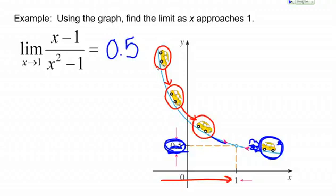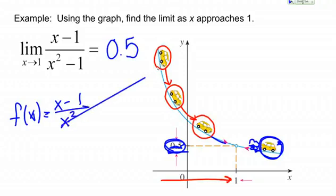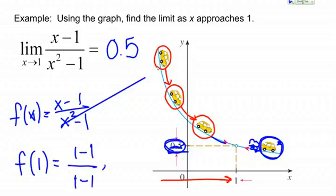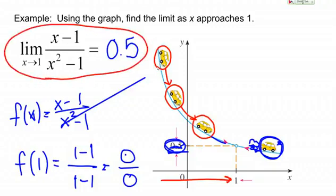That's the idea of a limit: where is the graph headed as you get close to the point? What's going on near the point? The big idea is that we don't care what's actually happening at the point. For example, if F of X equals (X minus 1) over (X squared minus 1), and we try to actually plug in 1, we get 1 minus 1 over 1 minus 1, which is 0 over 0 — that doesn't make any sense; we can't divide by 0. We can't actually plug the point in, but we can still say something about it: we can say that it's getting close to 0.5.